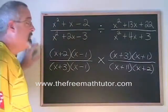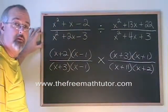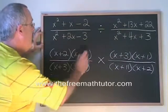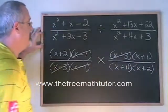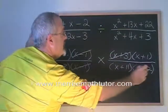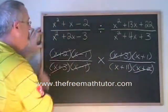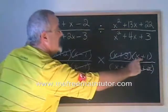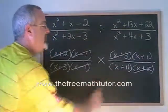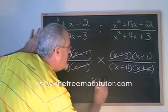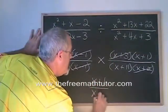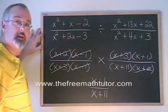Now this is just like a multiplying algebraic fractions question. We will cancel and simplify. These x minus 1s cancel. These x plus 3s cancel. And all that's left is the x plus 1 here and the x plus 11 down there. So our final answer is x plus 1 over x plus 11.